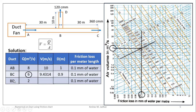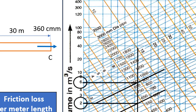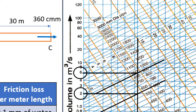Similarly, for duct section BD, volume flow rate is 2 cubic meters per second. Drawing a horizontal line from 2 on the y-axis to intersect the 0.1 friction loss line, the constant diameter line passing through this intersection is 600 mm, which equals 0.6 meters. So diameter of duct section BD equals 0.6 meters. Using V equals Q divided by area equals 2 divided by (π/4 × 0.6²), velocity through duct BD equals approximately 7.07 m/s. From the chart, velocity is approximately 9.4 m/s for BC and 7 m/s for BD.